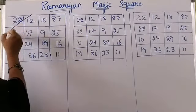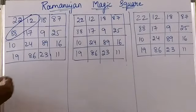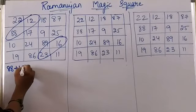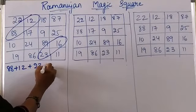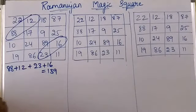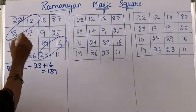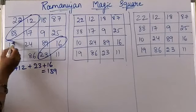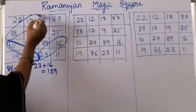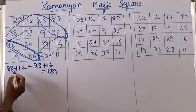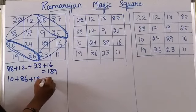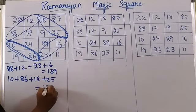Coming to another grouping: when you add 88 plus 12 plus 23 plus 16, you get 139. And when you add 10 plus 86 plus 18 plus 25, you also get 139.